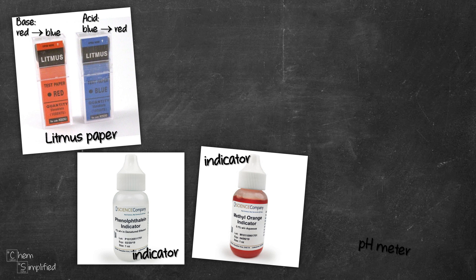They change color with pH. For example, phenolphthalein is colorless under acidic conditions and it changes to pink in basic solution.